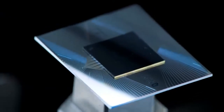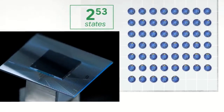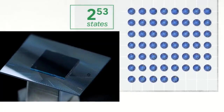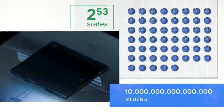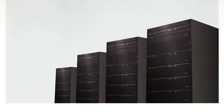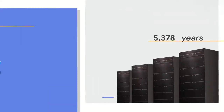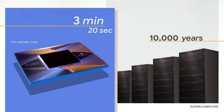The processor that achieved quantum supremacy is called the Sycamore processor. It's parallel processing two to the 53 states, which is 10 million billion. That enormous amount of parallel processing is what gives it the power. When we run small chunks of the computation, it outperforms the largest supercomputer in the world. Our estimate is that it will take thousands of years for a classical machine to complete the full computation.